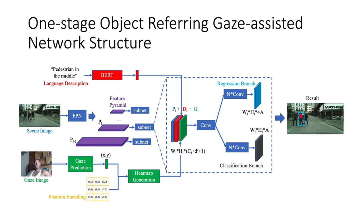Here is the network structure. The network contains three branches: language processing, scene image processing, and gaze image processing. The network is based on a one-stage object detector RetinaNet, and we extend it by incorporating the language feature and the gaze information into the feature pyramid. To efficiently use the gaze signal, we build a gaze heat map with the gaze prediction and an entry position encoding map.